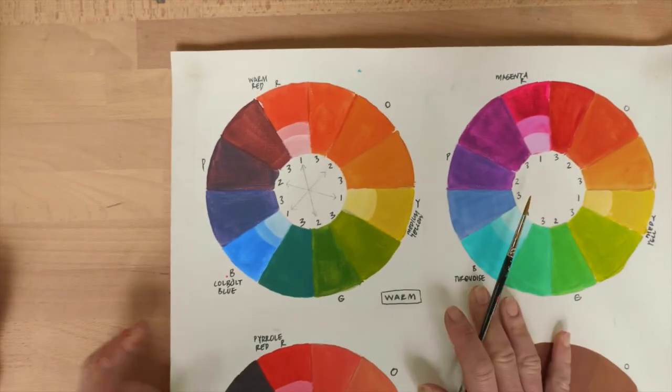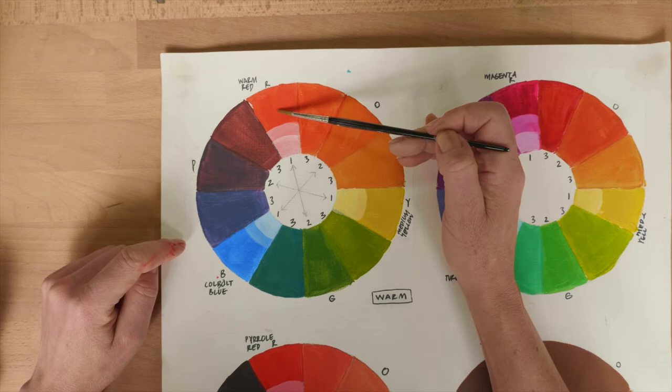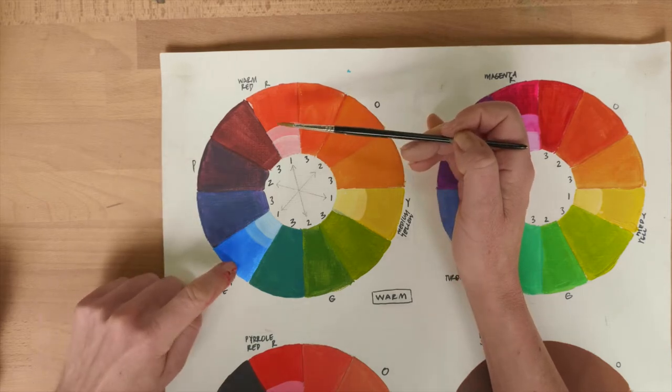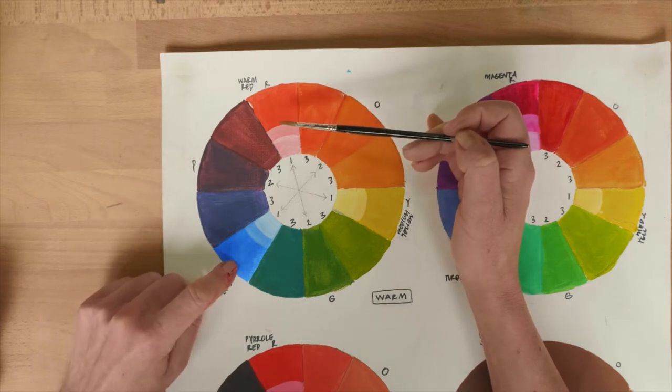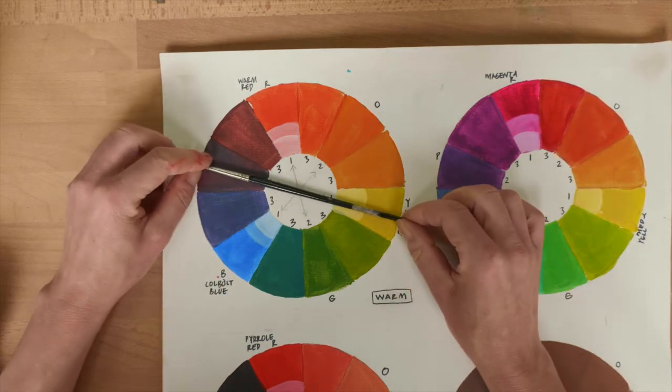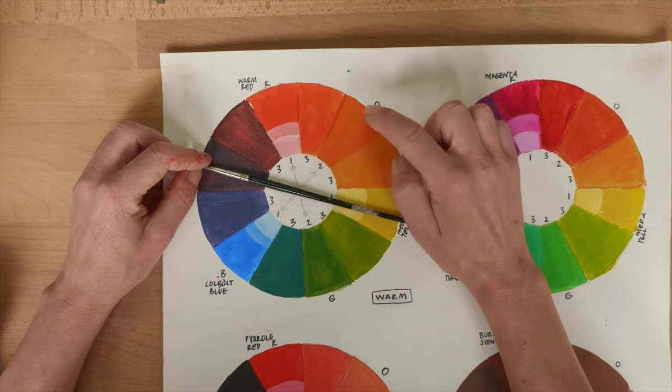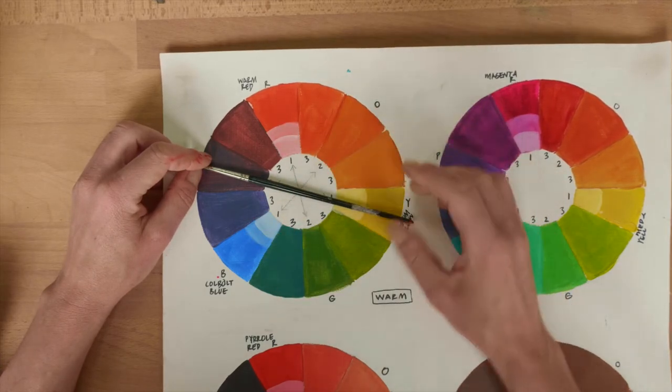This will give you a slightly better idea of it. So here we've got our primary red, we've got a cobalt blue but a fairly primary blue, and a medium yellow. If we are to look straight across our color wheel, we've got our primaries, our secondaries, and our tertiaries.